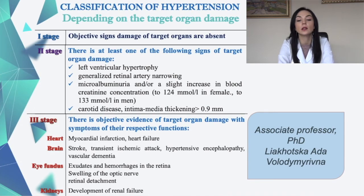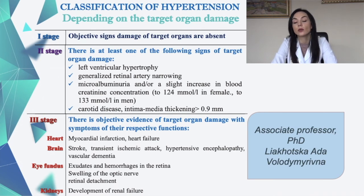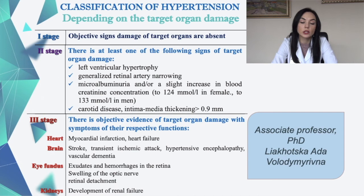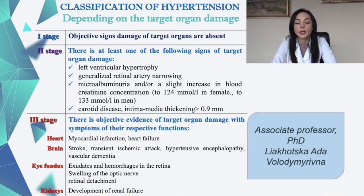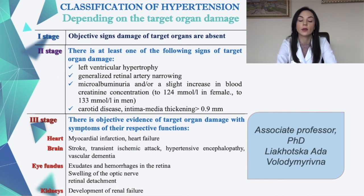The classification of hypertension by target organ damage: Stage 1 — no objective signs of target organ damage. Stage 2 — at least one of the following: left ventricular hypertrophy, generalized retinal artery narrowing, microalbuminuria and/or slight increase in blood creatinine, carotid intima-media thickening more than 0.9 mm. Stage 3 — objective evidence of target organ damage with symptoms: heart — myocardial infarction, heart failure; brain — stroke, transient ischemic attack, hypertensive encephalopathy, vascular dementia; eye fundus — exudates and hemorrhages in the retina, swelling of the optic nerve, retinal detachment; kidneys — development of renal failure.